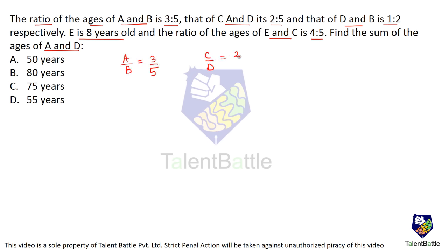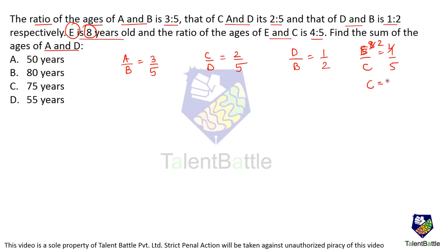A/B = 3/5, C/D = 2/5, D/B = 1/2, and E/C = 4/5. Since the age of E is given as 8 years, I substitute: 8/C = 4/5, so age of C comes out to be 10 years. Now substituting C = 10 into C/D = 2/5: age of D comes out to be 25 years.